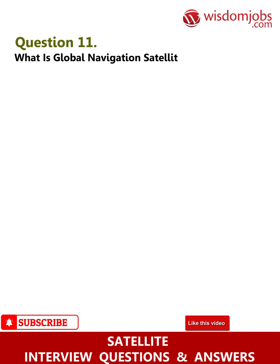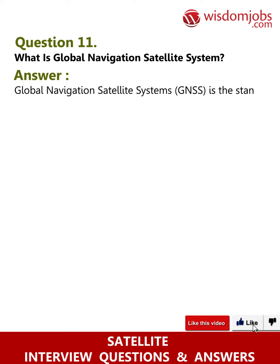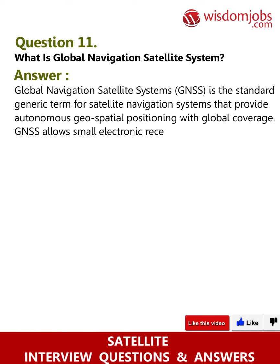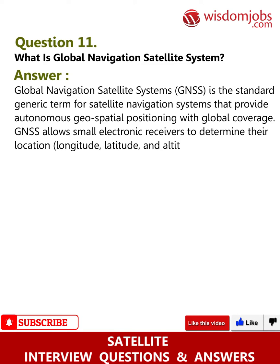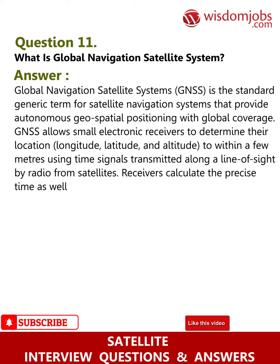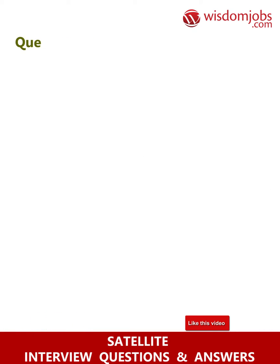Question 11: What is a global navigation satellite system? Answer: Global Navigation Satellite System (GNSS) is the standard generic term for satellite navigation systems that provide autonomous geospatial positioning with global coverage. GNSS allows small electronic receivers to determine their location — longitude, latitude, and altitude — to within a few meters using time signals transmitted by radio from satellites. Receivers can also calculate precise time, and satellites can be used as a reference for scientific experiments.